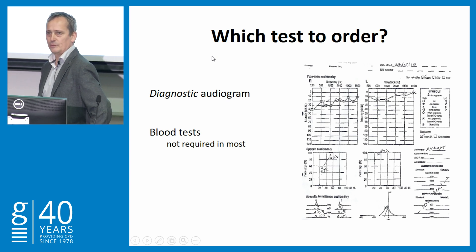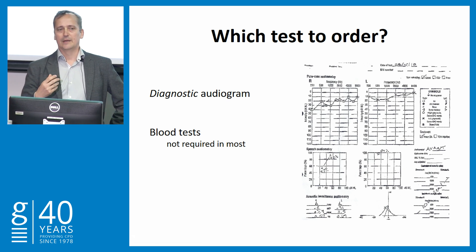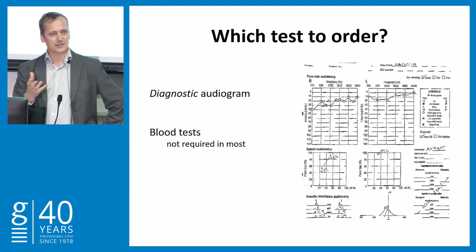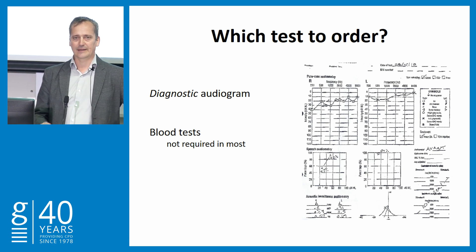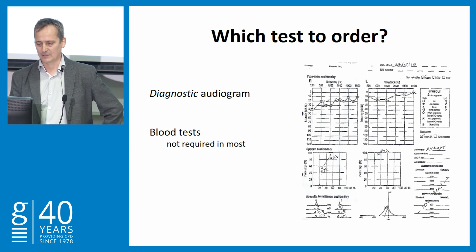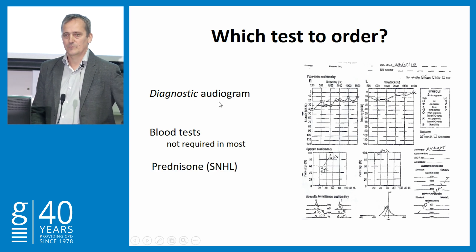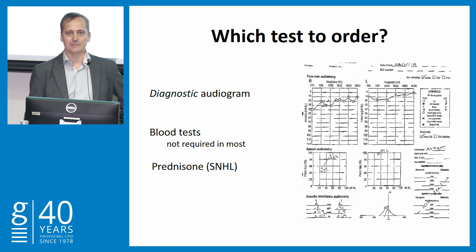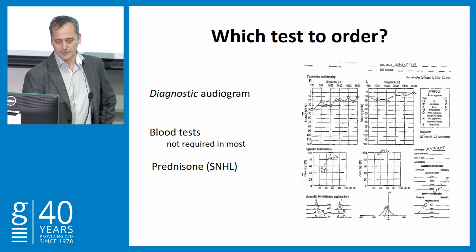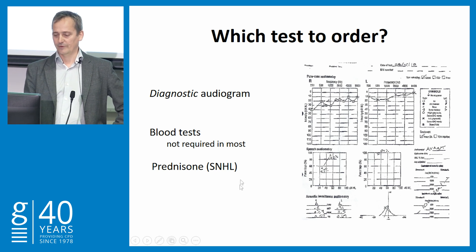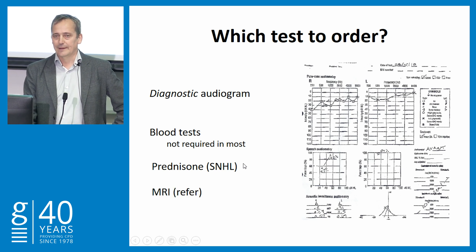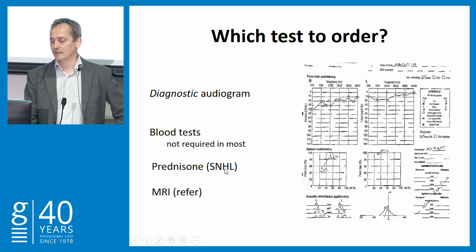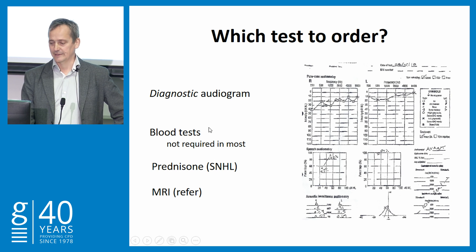Regarding blood tests: we used to do a whole battery, but we stopped, unless you have clinical suspicions of something else going on. If there's a bilateral hearing loss, or you suspect an autoimmune cause, do a blood test — but overall they don't help much. Once you have the audiogram, you commence treatment with prednisone and refer to ENT. We normally do a virtual referral, arrange an MRI scan in the public system, and decide what to do once we've seen the results.